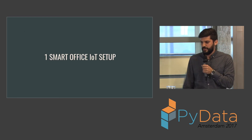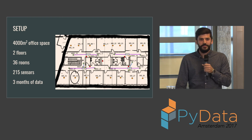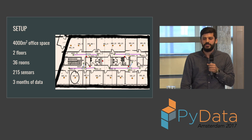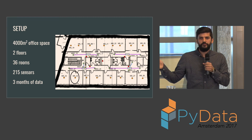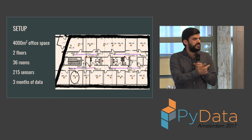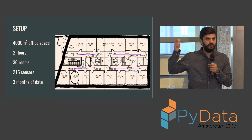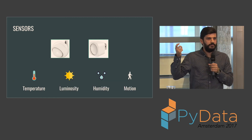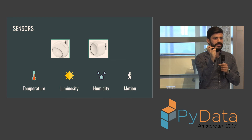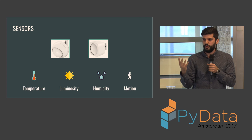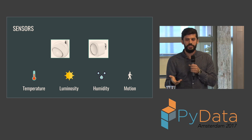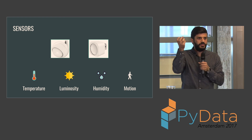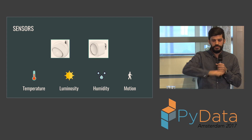Let me jump straight into the smart office IoT setup. We had access to two floors of an office building in Germany comprising 36 rooms, where we installed over 200 sensors and recorded data for a period of around three and a half months. Here you see a sketch of one of the floors where the dots denote installed sensors in the rooms as well as in the hallways. These are so-called multi-sensors — a single device containing four sensors: temperature, luminosity, humidity, and motion — installed on the ceiling of the building.